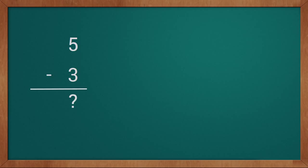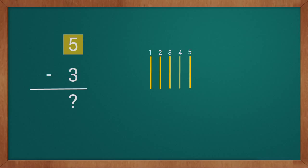To solve this problem we will use sticks. Our first value is five, so we will draw five sticks: one, two, three, four, five. We have five sticks. Now we have to subtract three, so we will remove three sticks from five sticks. Now we will count how many sticks we have: one, two. We have a total of two sticks. So our answer is two. This way we got five minus three equals two.